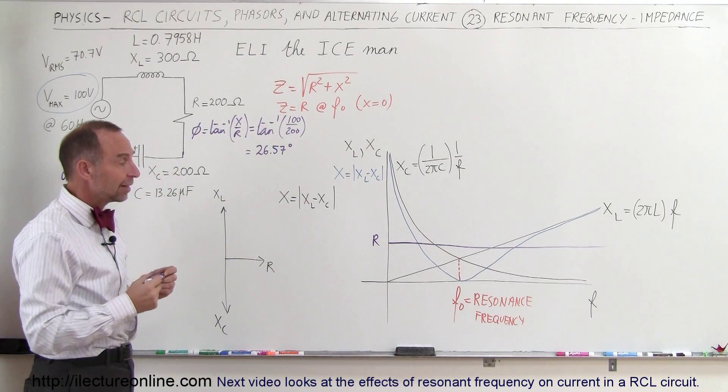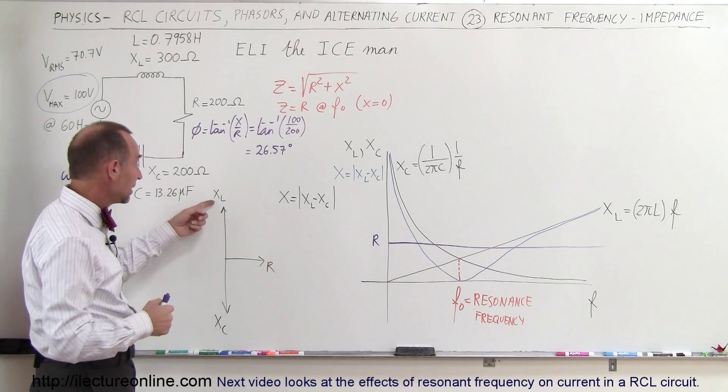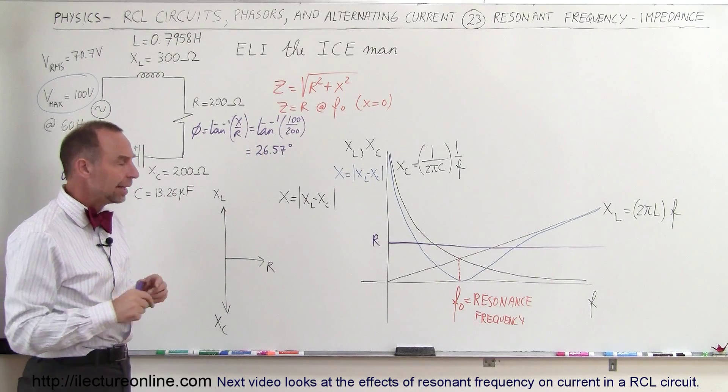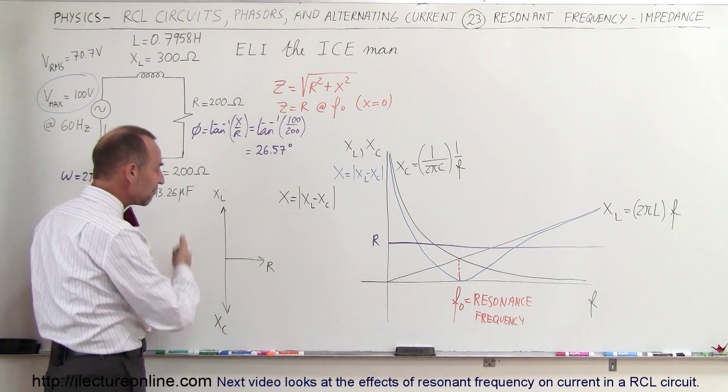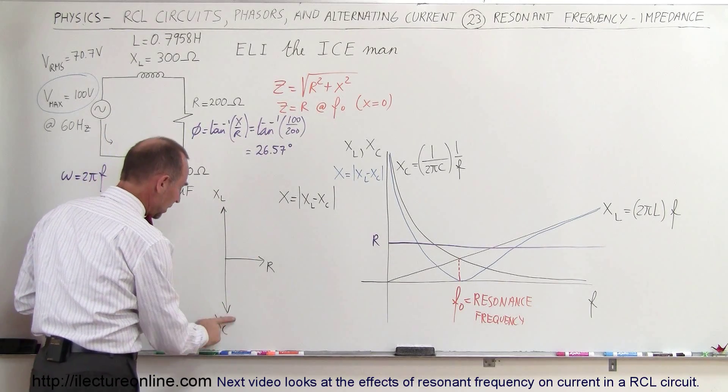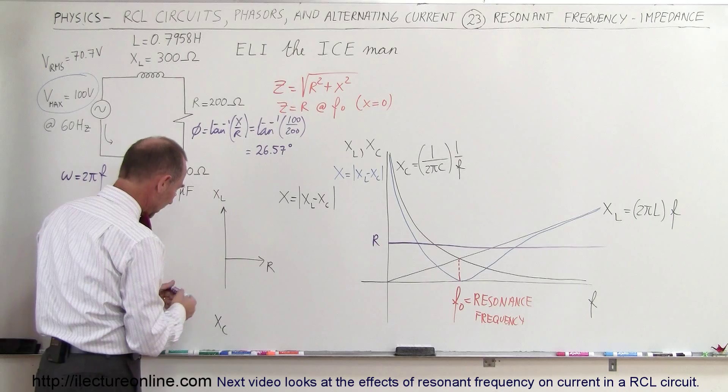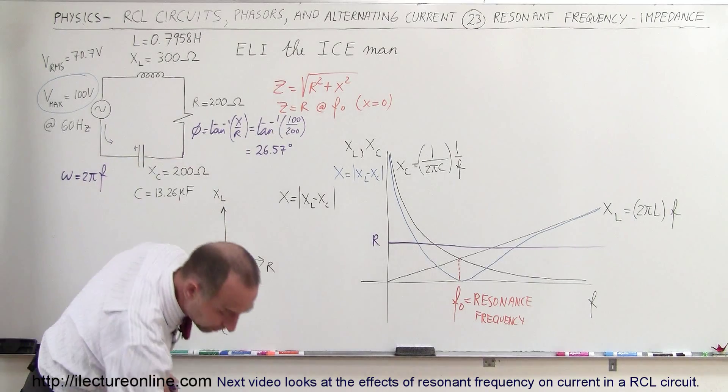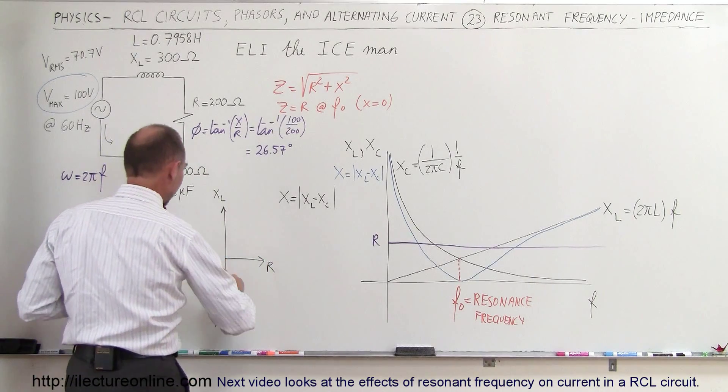So now we realize that we have to add all three, the x sub l, the x sub c and the resistance together, and notice that it's going to be a vector sum. Now let me change this a little bit right here, so let's say that our capacitive reactance is smaller than the inductive reactance.